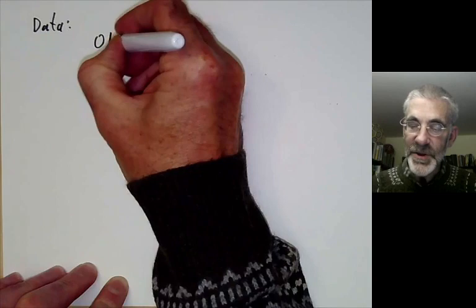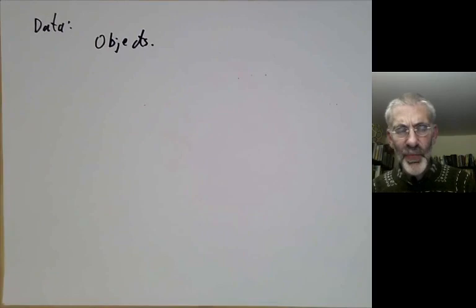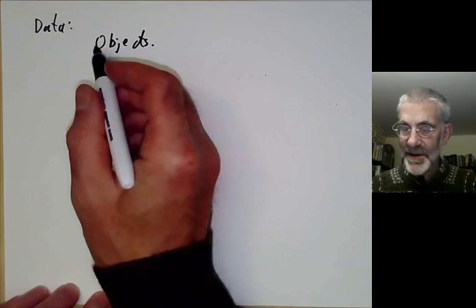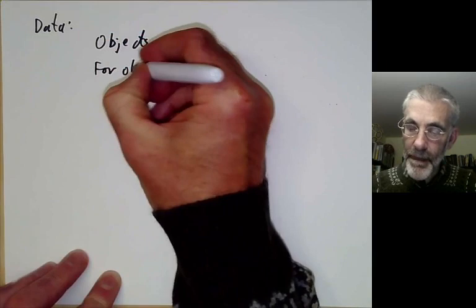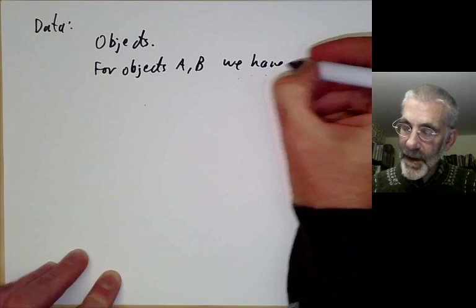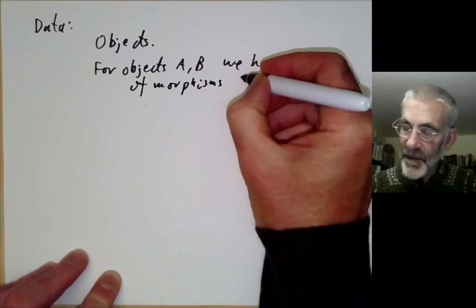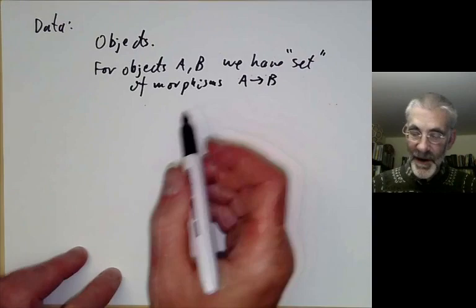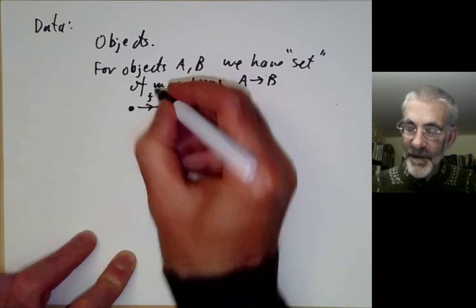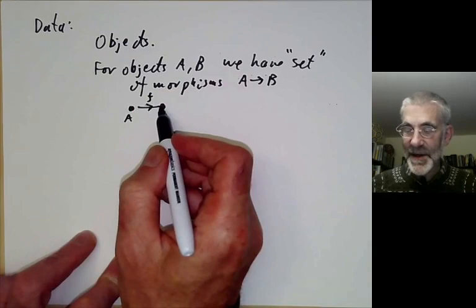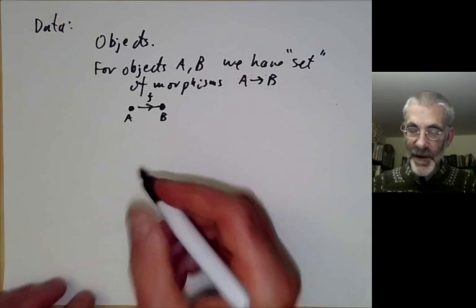Now we're going to define the general concept of a category by abstracting the common properties of these three examples. The data needed to define a category is as follows. First, we have a collection of objects — you might think the objects form a set, but there's a slight problem because the set of all sets isn't actually a set, so we'll be vague and just say we have some objects. We also have, for objects a and b, a set of morphisms from a to b. In category theory you draw objects as points and morphisms as arrows between them.